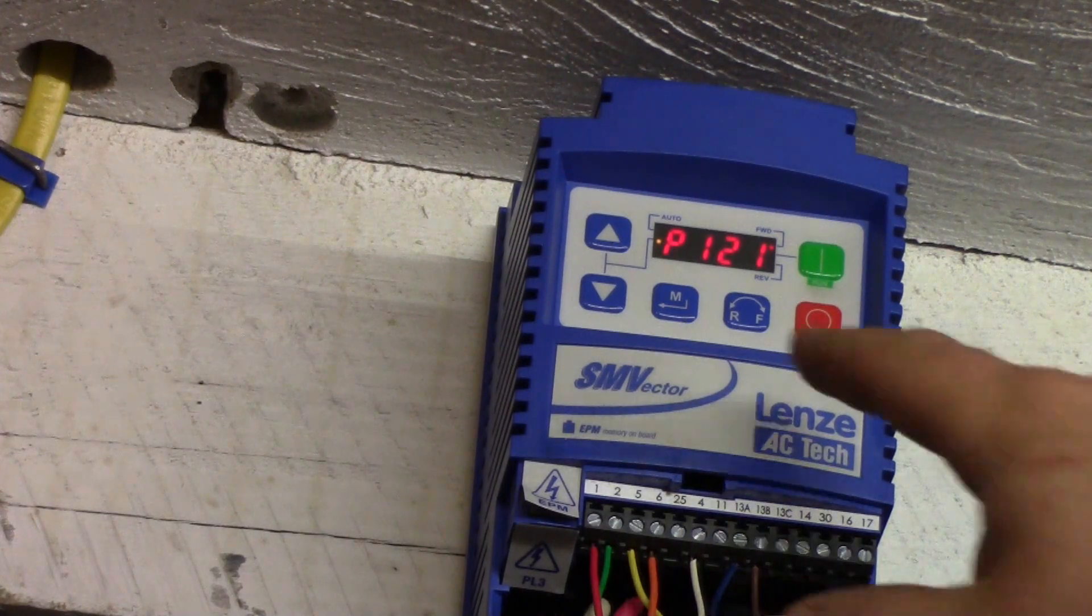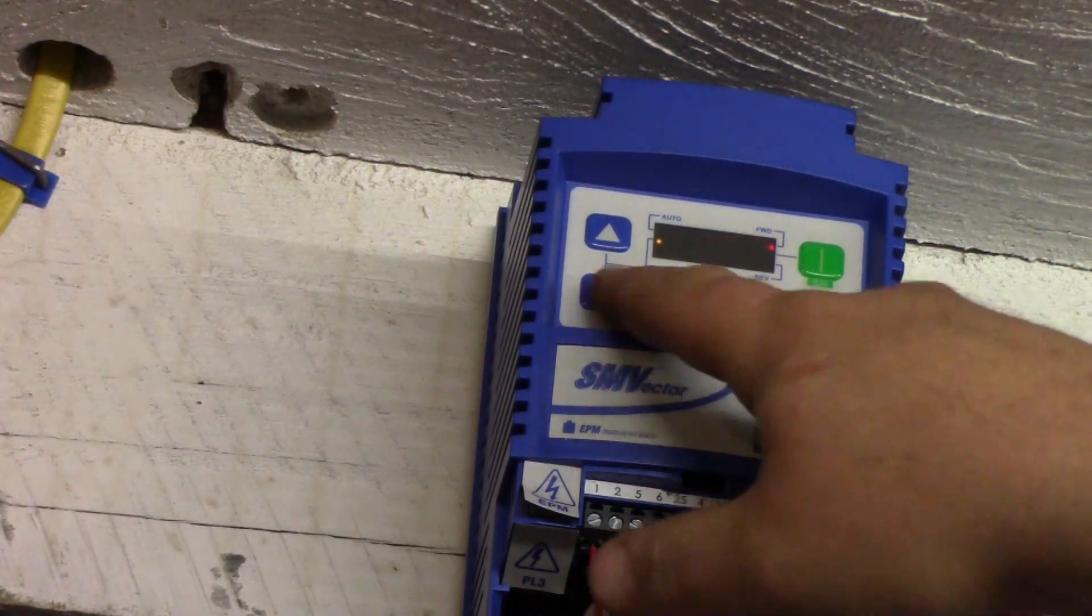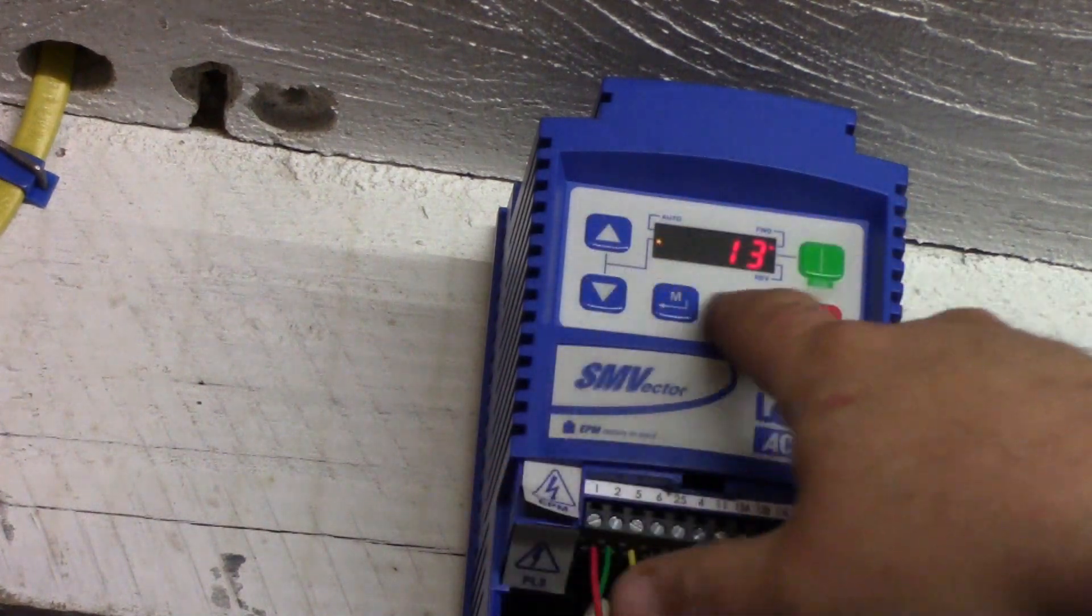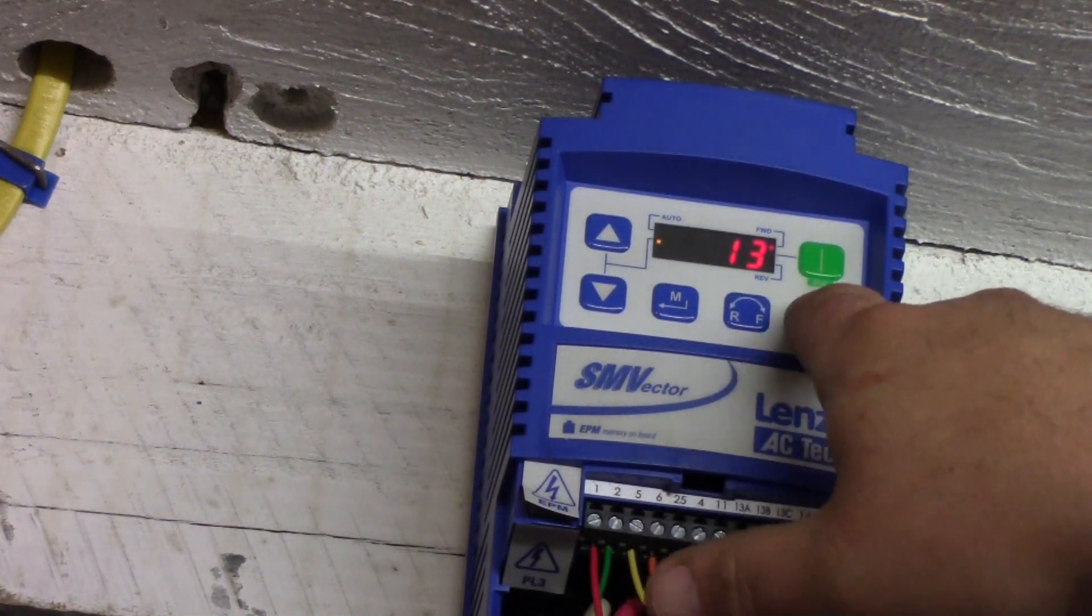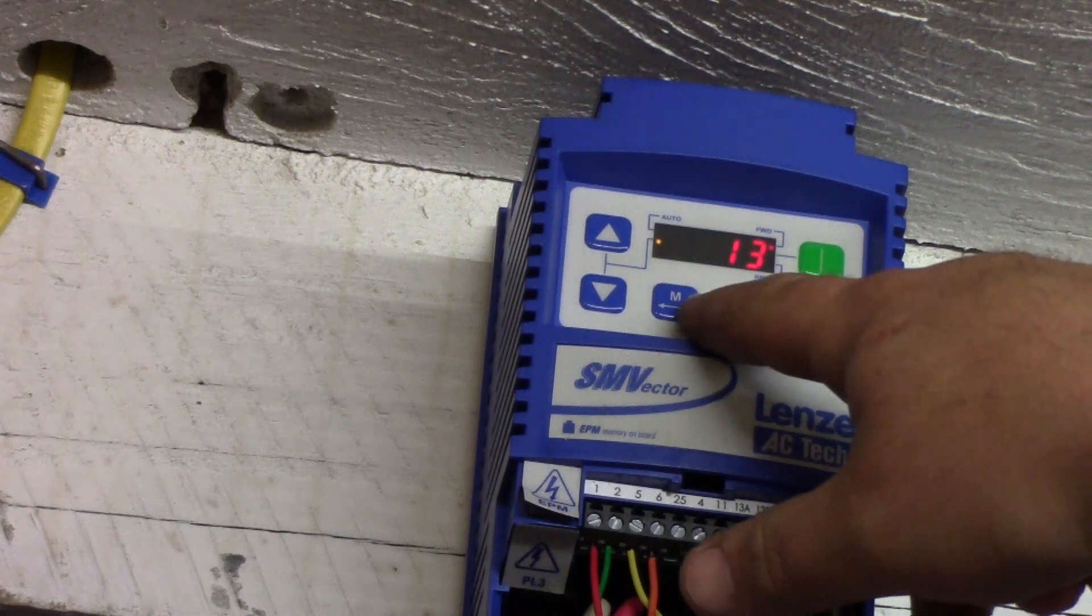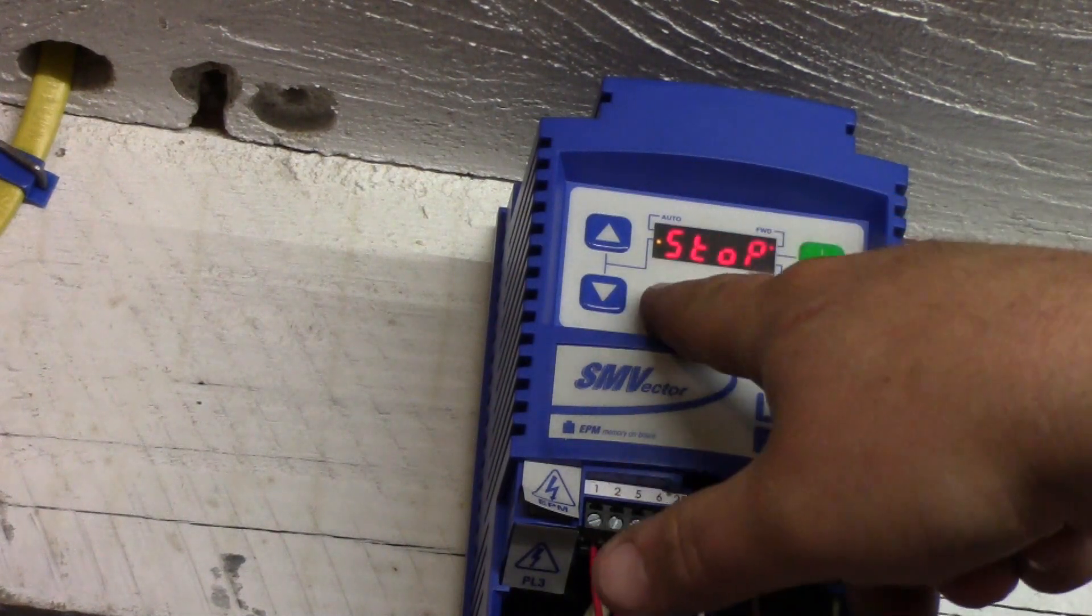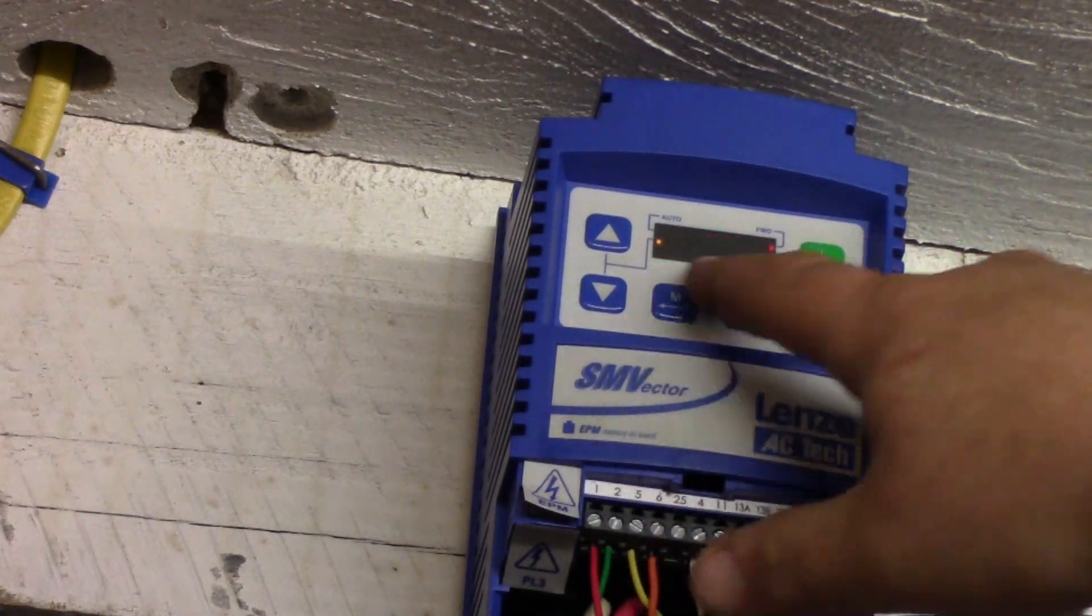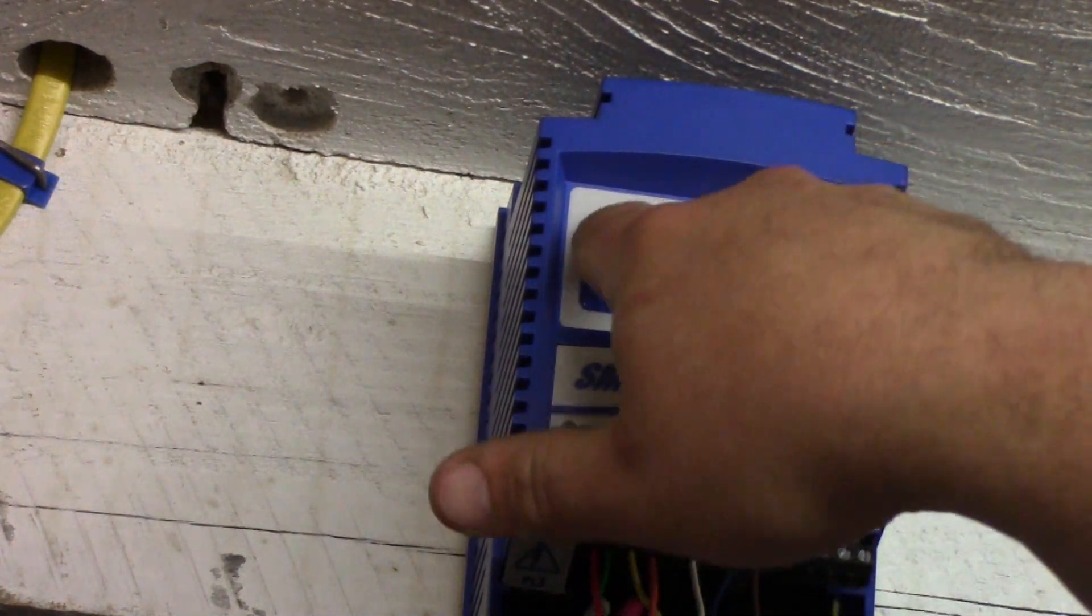Now we want to set our other parameters, our inputs, according to that little diagram. So 121 is going to be 13, and 122 is going to be 14.